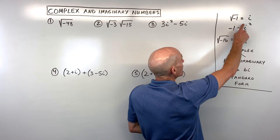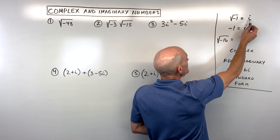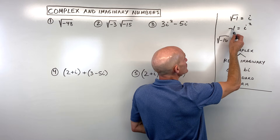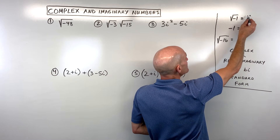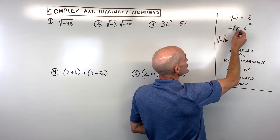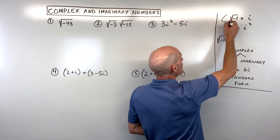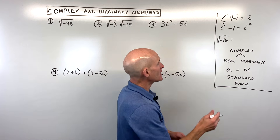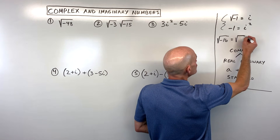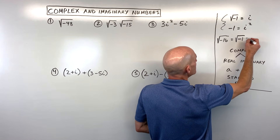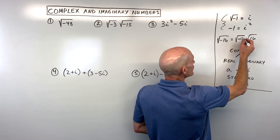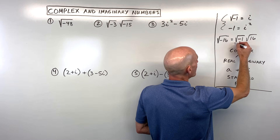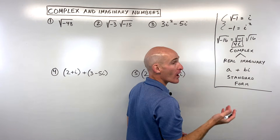Another thing you want to know about this notation: if we square both sides of the equation, i squared is equal to negative one, because the square and the square root cancel and you're just left with negative one. So these are good to remember. When I simplify a square root with a negative in it, I split it into two parts: square root of negative one times square root of 16. The square root of negative one is i, and the square root of 16 is four, so altogether I would write this as 4i.